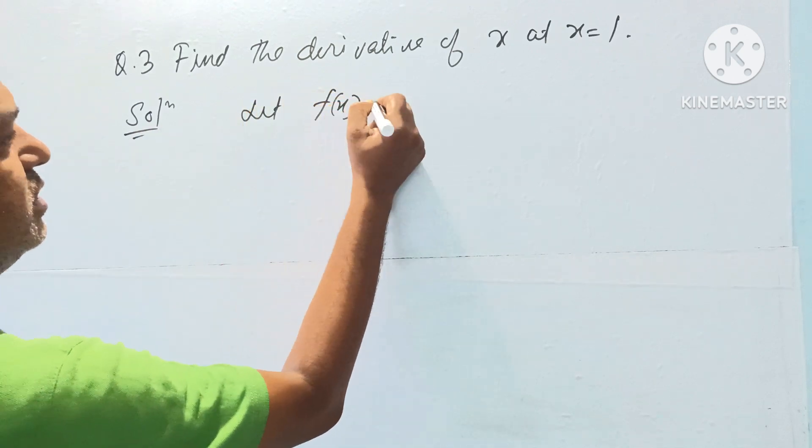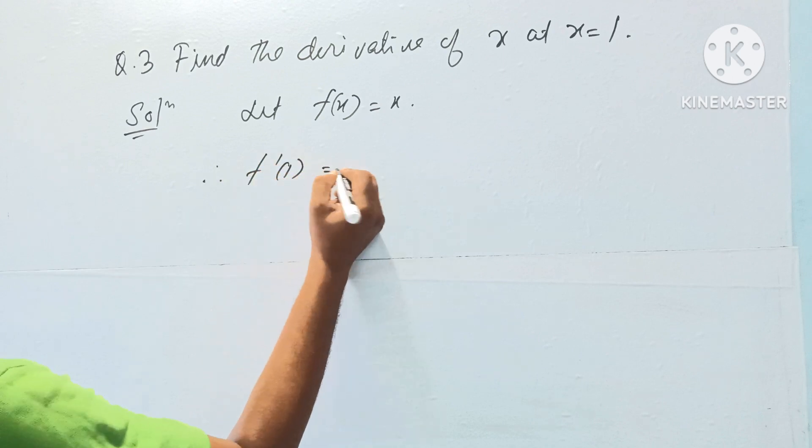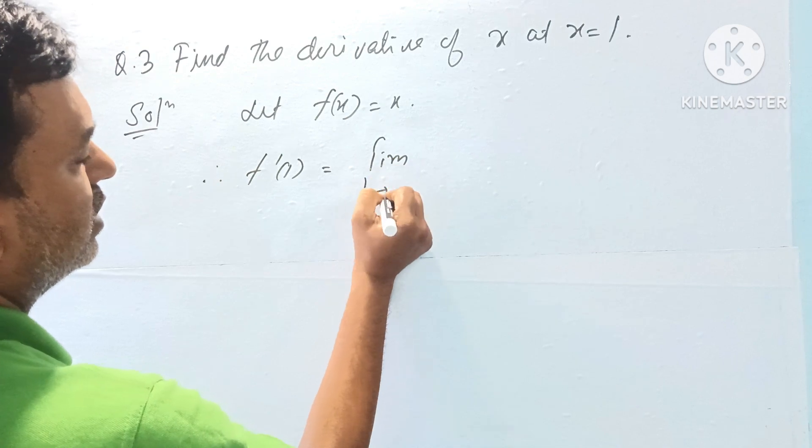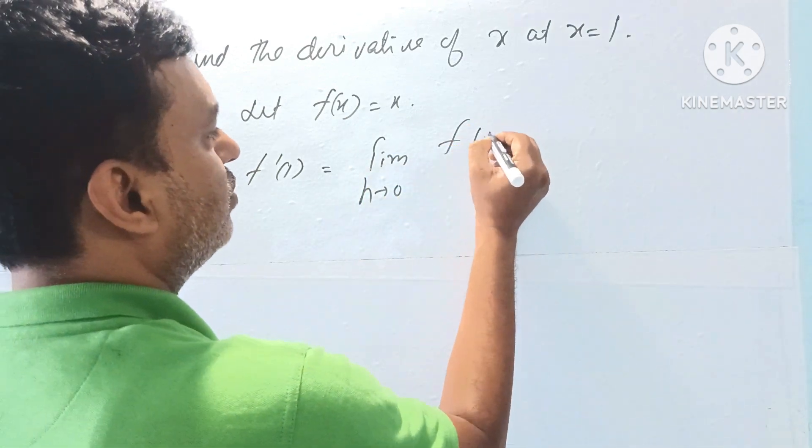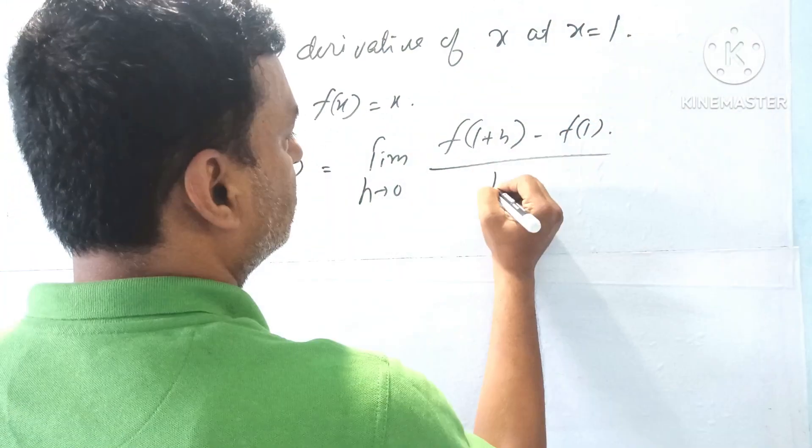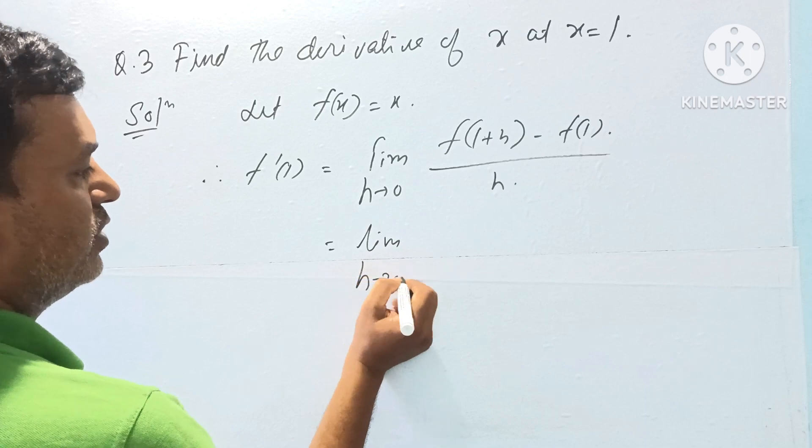Let f(x) equal x. Therefore, f dash of 1 is limit h tends to 0, f of 1 plus h minus f of 1, by h. Limit h tends to 0...